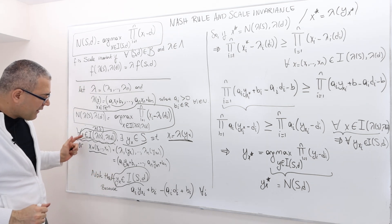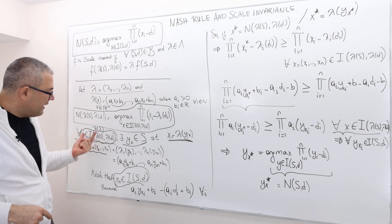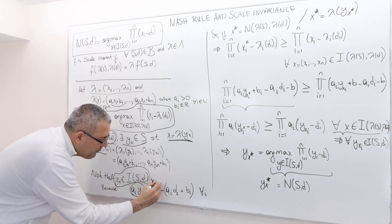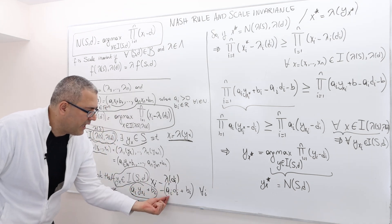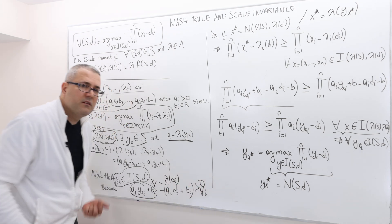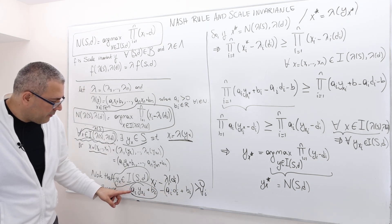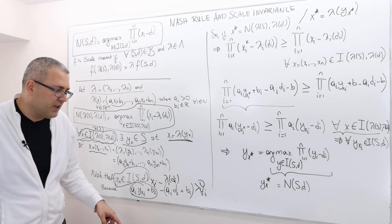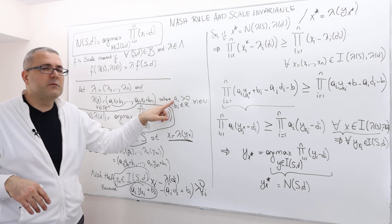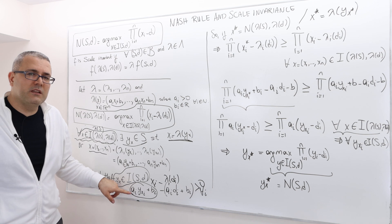Why does individual rationality transfer? For each player i, xi equals ai times yxi plus bi, and individual rationality means xi minus lambda_i·di is positive — that is, (ai·yxi + bi) minus (ai·di + bi) equals ai times (yxi minus di), which is positive because ai is positive. This is why positive affine transformation is important: you cannot transform by multiplying with negative numbers. Therefore, if x is individually rational, then yx satisfying this relation must also be individually rational in the original problem.